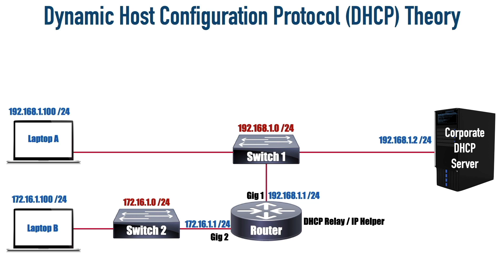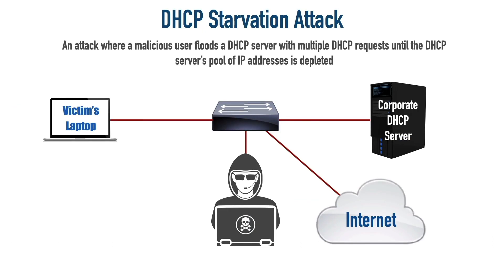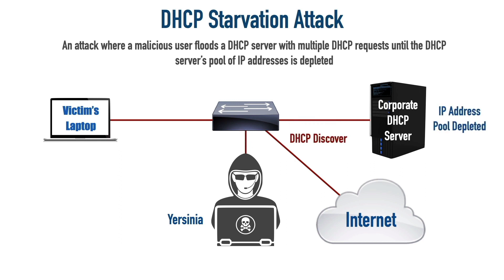Now let's consider how an attacker might attack DHCP. The DHCP server only has a finite pool of IP addresses to hand out. What if the attacker requested a bunch of IP addresses from the corporate DHCP server? It could deplete that pool and starve out any other clients trying to get IP address information. I'm going to show you a demo using a utility called Yersinia that comes built into Kali Linux, where the attacker sends out hundreds and thousands of DHCP discover messages and allocates all of the IP addresses available in that pool.